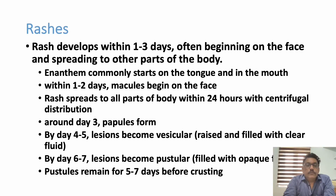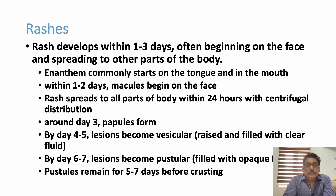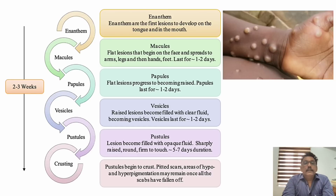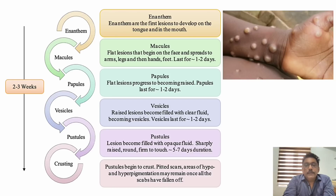Around the third day lesions become papules. By the fourth to fifth day they become vesicular, raised and filled with clear fluid. By day six they become pustules containing pus, changing from clear to an opaque color. Pustules remain for five to seven days, then become crusted and fall off. During the pustular phase, severe secondary skin infections can occur, and sometimes lesions become hemorrhagic pustules, making the condition more severe.